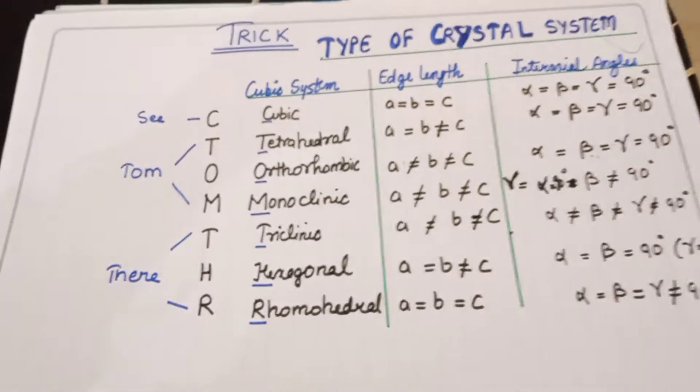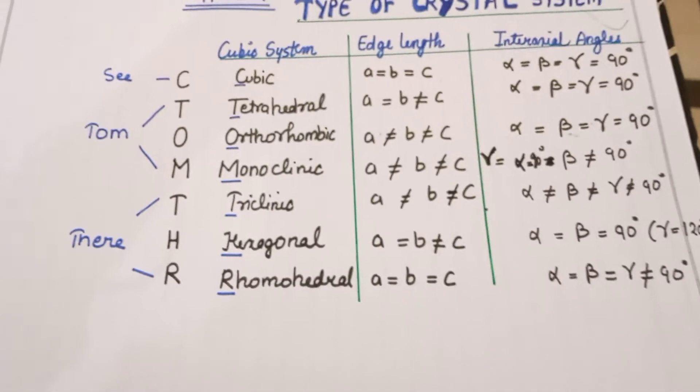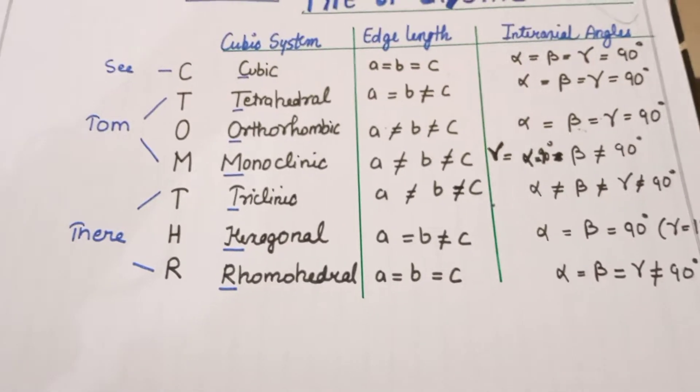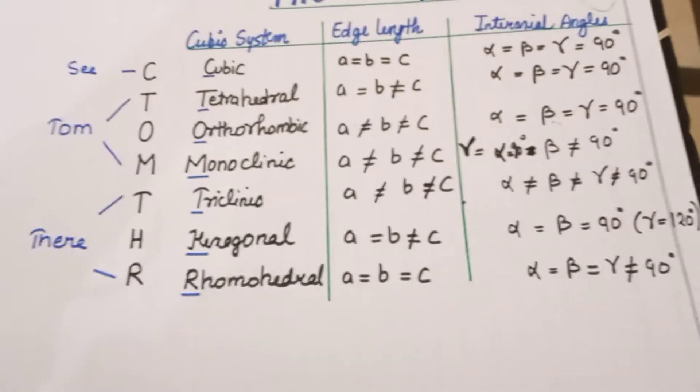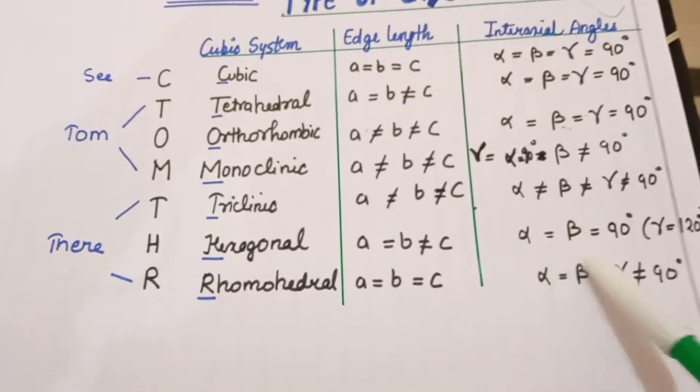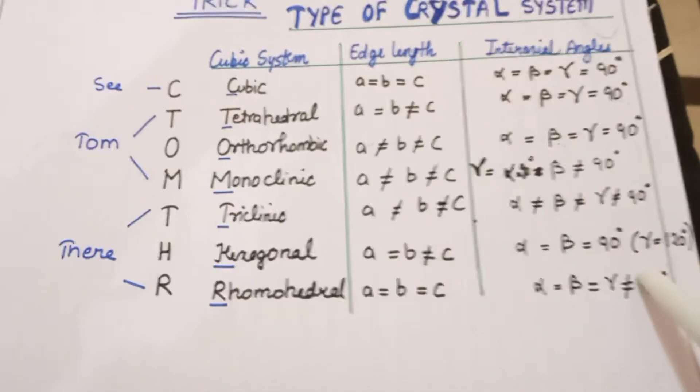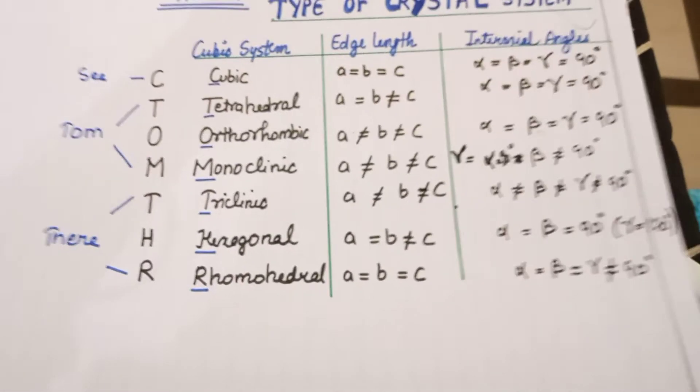Then is the Hexagonal, which is again very important. In this case, Alpha equal to Beta equal to 90 degrees, but Gamma equal to 120 degrees.